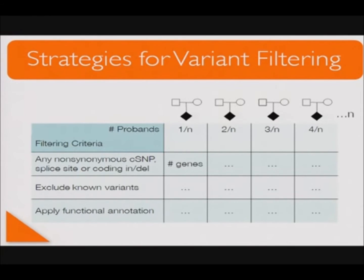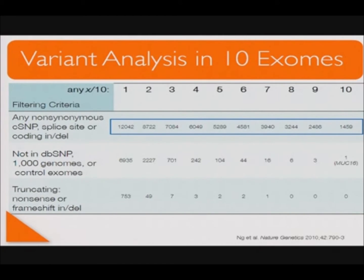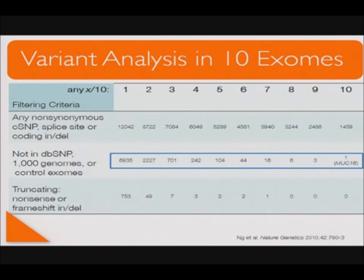Here are the results of analyzing variants in the exome sequencing of 10 individuals with Kabuki syndrome. The sequential filtering strategy is shown row by row. In the first row, we tracked variants common across 1 through 10 probands — non-synonymous SNPs, splice-site, or coding insertion-deletions. In the second row, we excluded known variants in dbSNP, the 1000 Genomes, or control exomes already sequenced. This led to one large gene, MUC16, a mucin gene that has appeared in several other exome screens as being polymorphic.